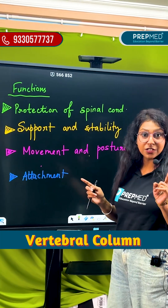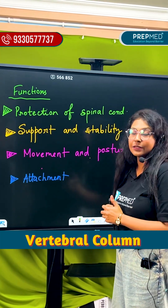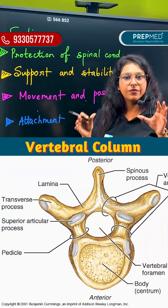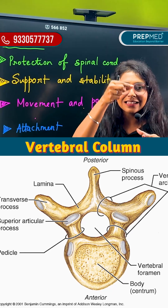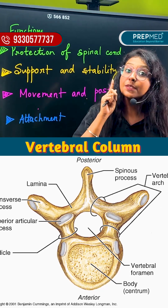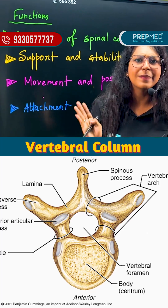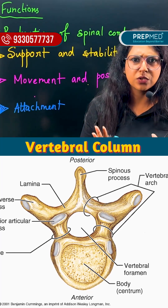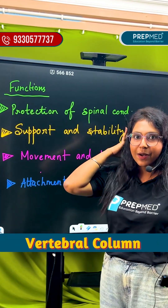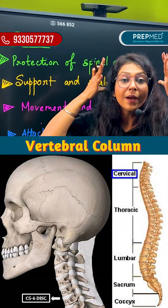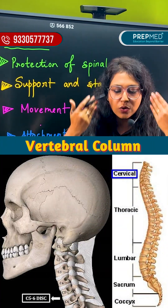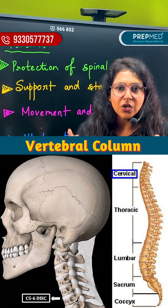What are the functions of the vertebral column? First, the protection of the spinal cord. In the vertebral column, we have the spinal canal. The vertebral column basically protects the spinal cord because it's a bone structure. Next, support and stability — the vertebral column gives our body a stable structure.